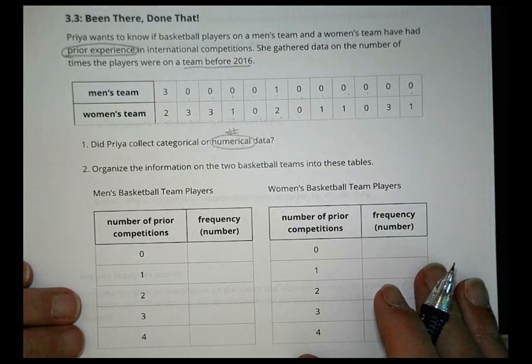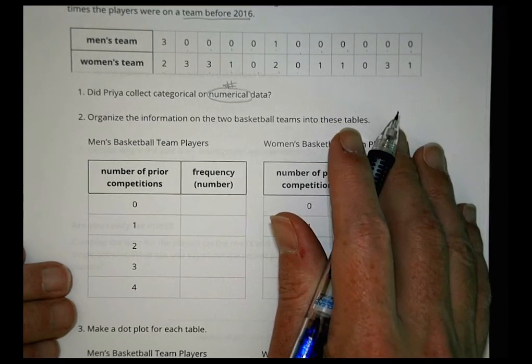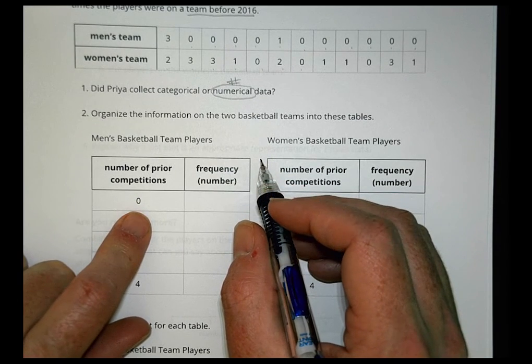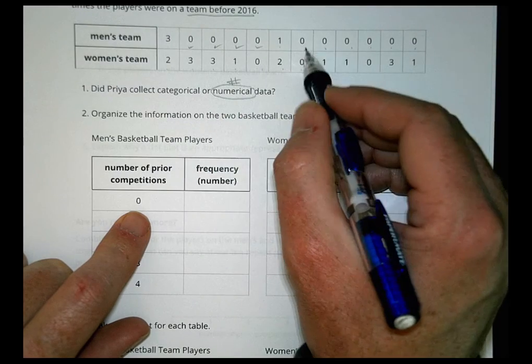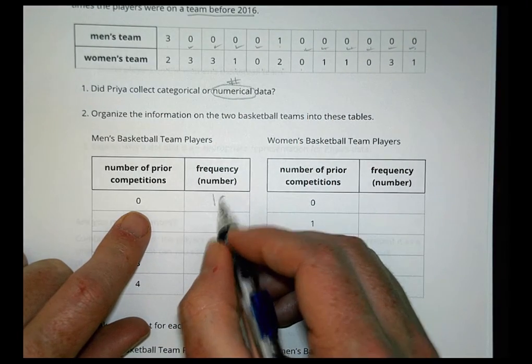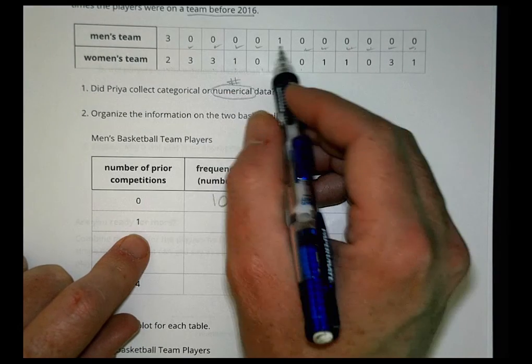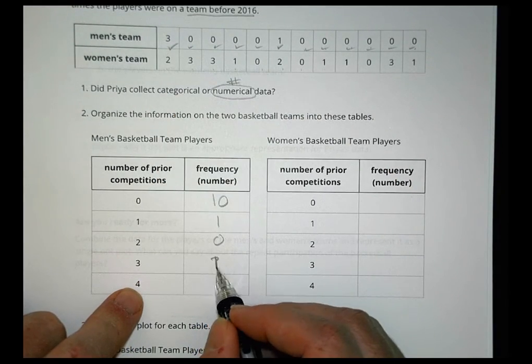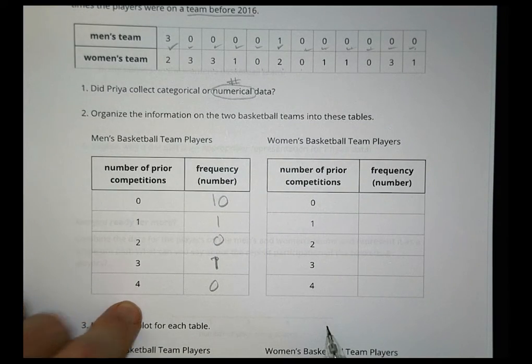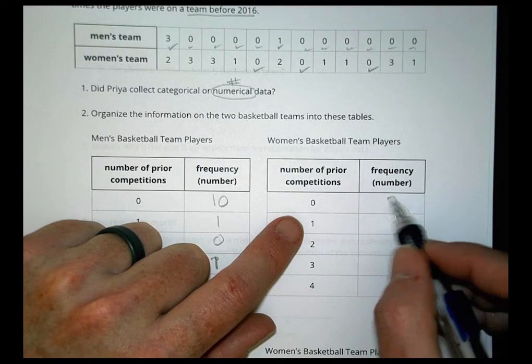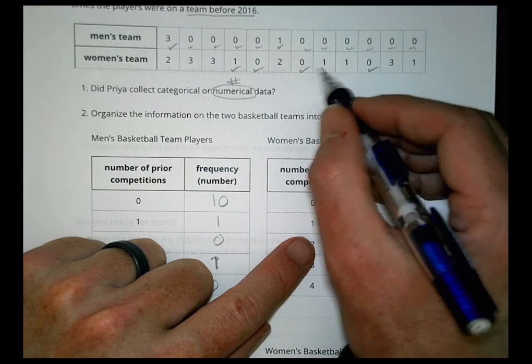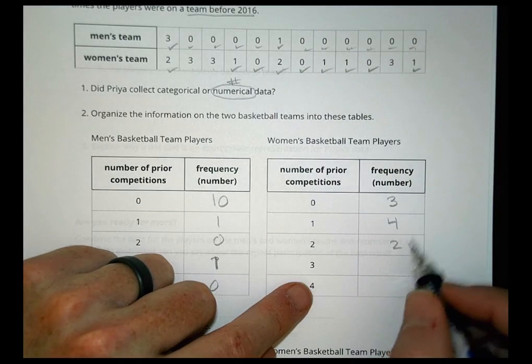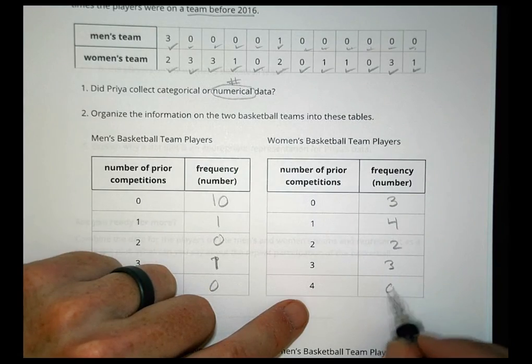Now let's organize the information for the two basketball teams into these tables. We're going to take what's here in this chart and put it in here, men's and women's. So how many number of prior competitions were zero for the men? We have ten men had zero prior competitions before they made this team. We had one had one prior experience, nobody with two. We had one person with three and nobody with four. For the women, three women had no prior experience with the team. Four people had one year of experience before. For two, we had two people. We had three people with three, and nobody with four.